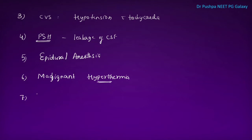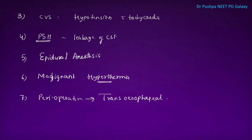The most sensitive indicator of myocardial ischemia in the perioperative setting is transesophageal echo. Contraindications for bag and mask ventilation are facial trauma, rapid sequence induction and intubation, and diaphragmatic hernia.